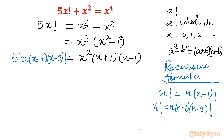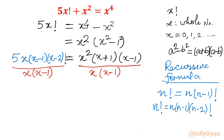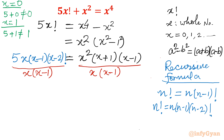I can divide both sides by x·(x-1), but first I must check that x=0 and x=1 are not solutions of the original equation. Putting x=0: 5·0! + 0 = 5 ≠ 0. Putting x=1: 5·1! + 1 = 6 ≠ 1. Neither is a solution, so we can safely divide and cancel x·(x-1) from both sides.